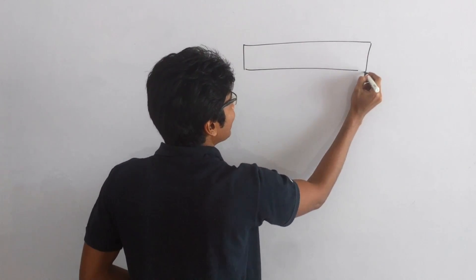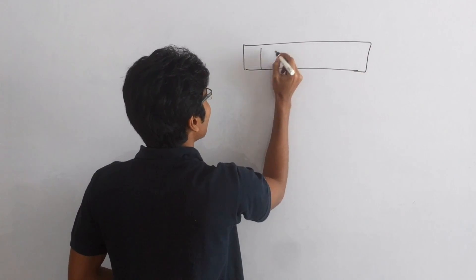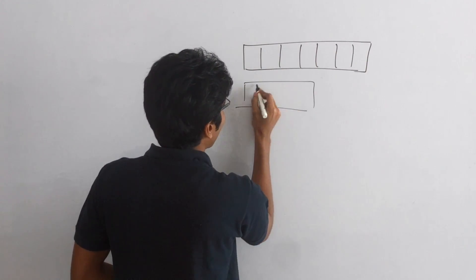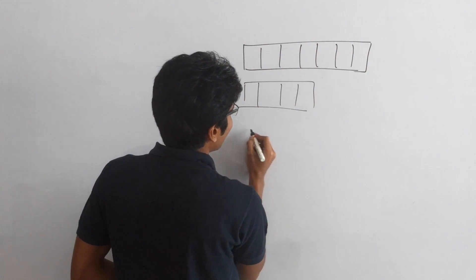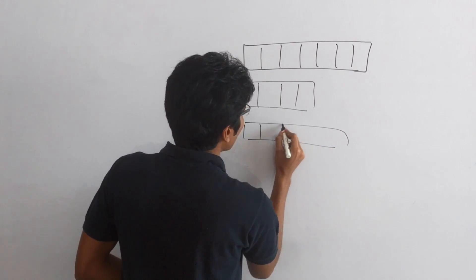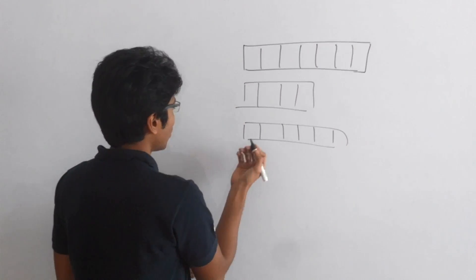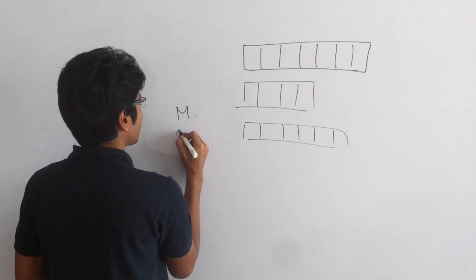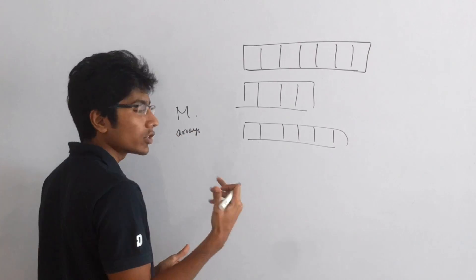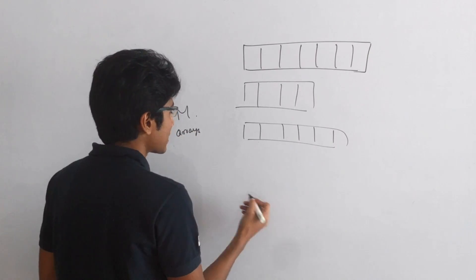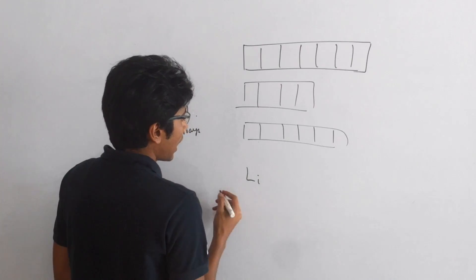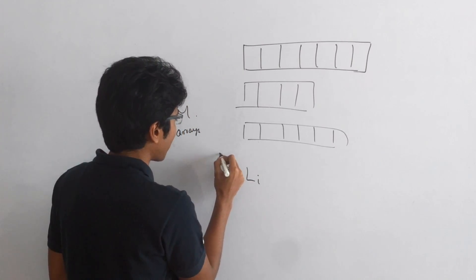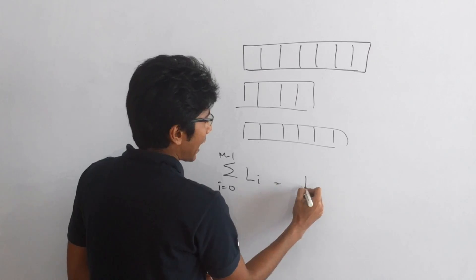You have n arrays, as you can expect in the magic array thing. Each of these arrays has a size L of i, and the sum of all these sizes from i equal to 0 to n minus 1 is equal to n.